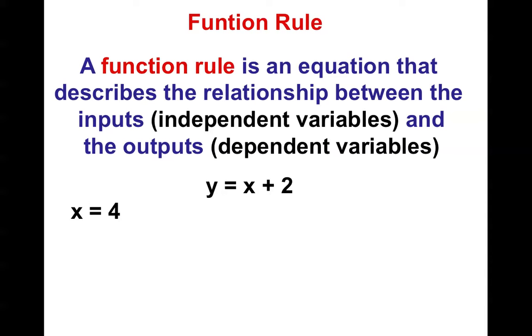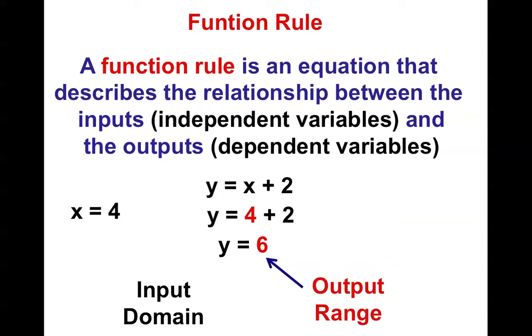So if I tell you that x equals 4, I put it into the equation. Notice it's the input. It's what I put into the equation. Then I solve it, and I find out that y equals 6. And that's the answer I get out of the equation. That is my output. It's also known as my range. So I have inputs, and I have outputs.